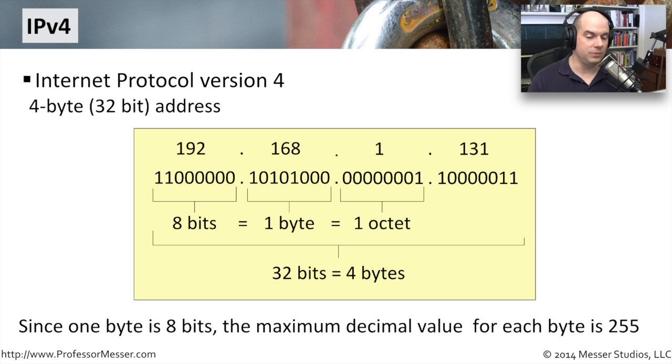You might hear these sections referred to as an octet because it's eight bits put together. Eight bits together is also a byte, at least in the computing architectures we tend to use. So when you hear bits, bytes, or octets, that's what it's referring to in this dotted decimal notation for IPv4.